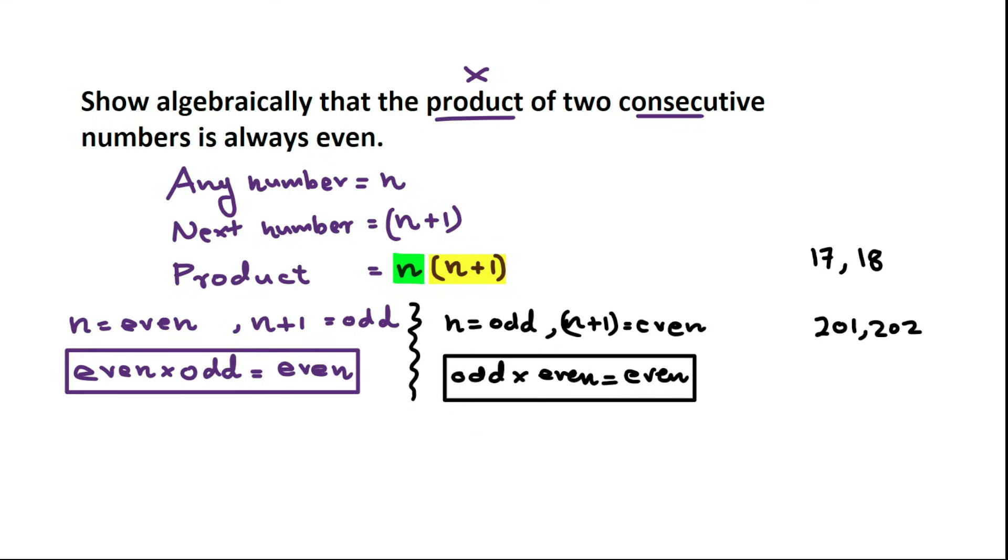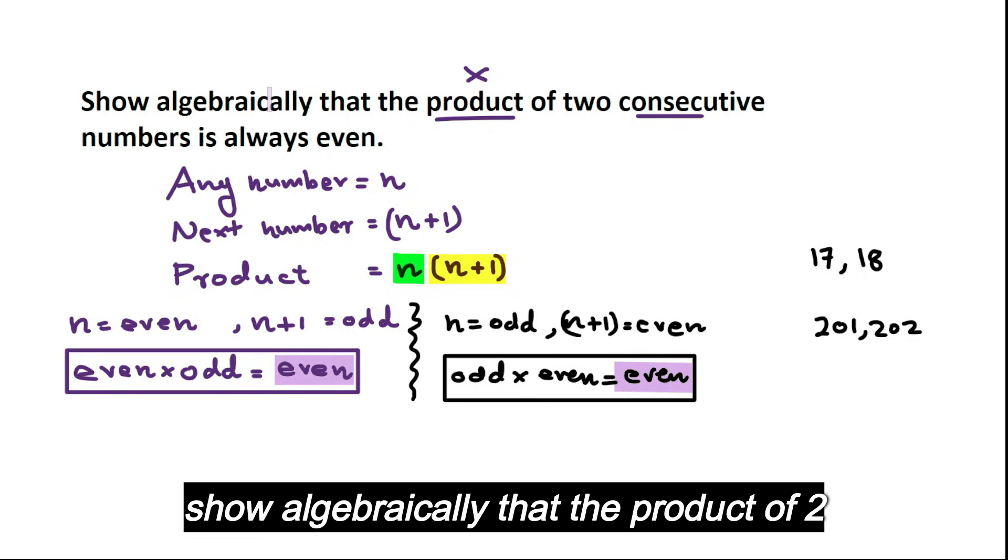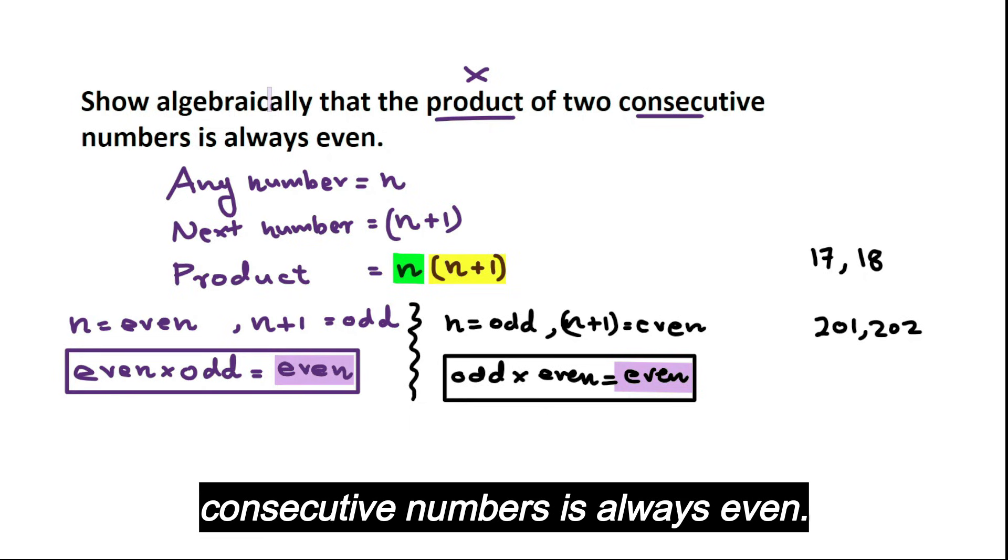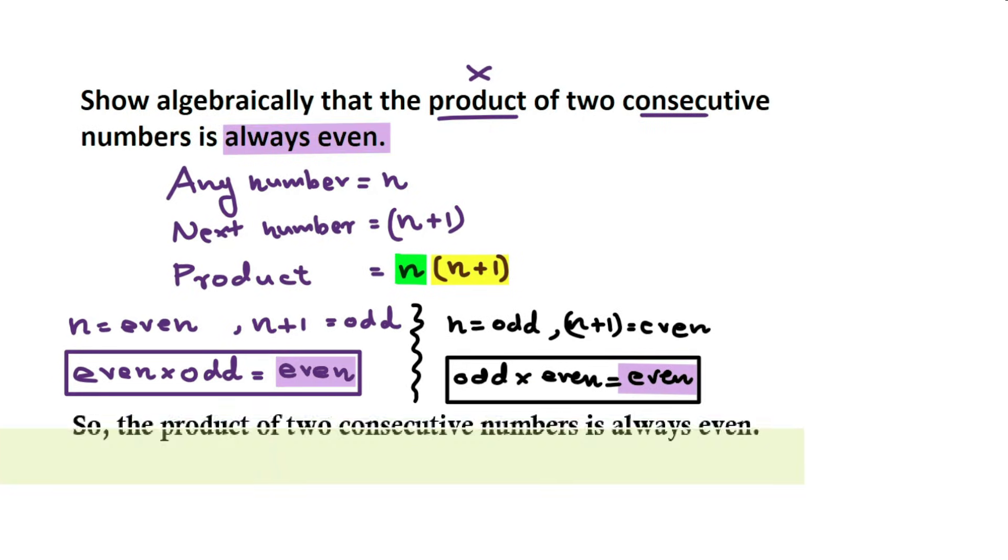So the question is, show algebraically that the product of two consecutive numbers is always even. We just showed that. So we can write the conclusion and done.